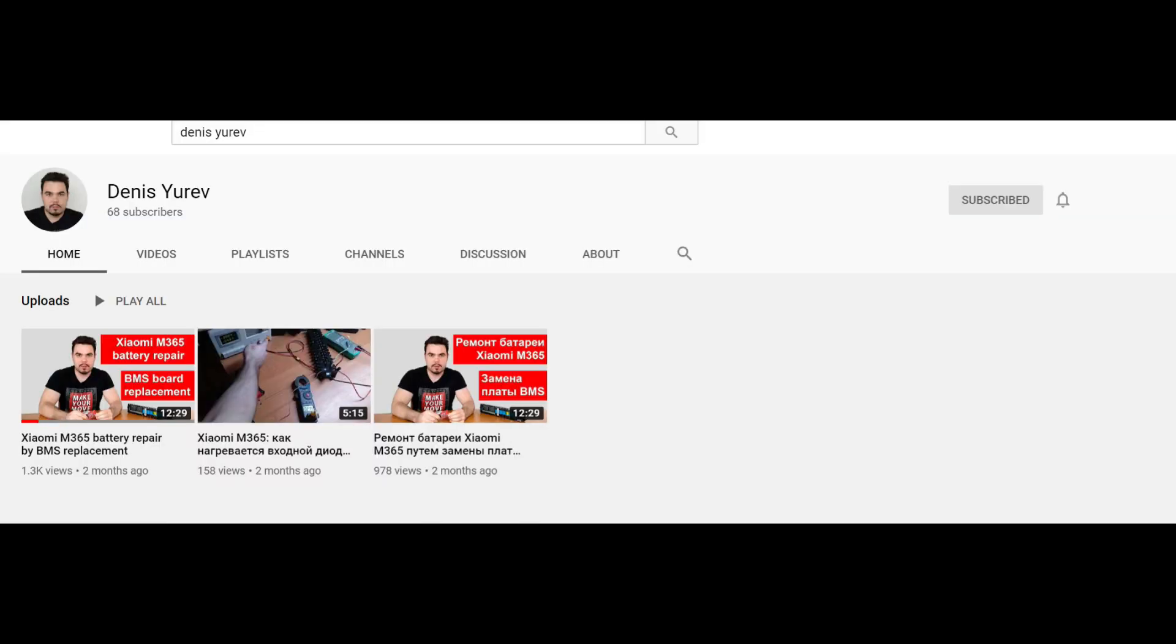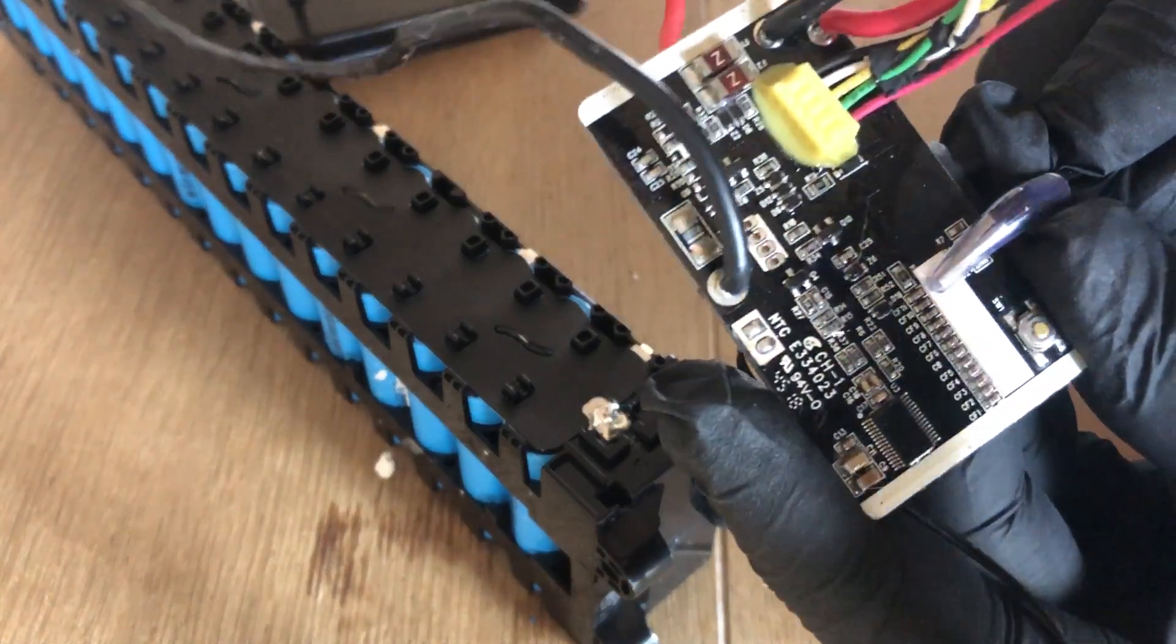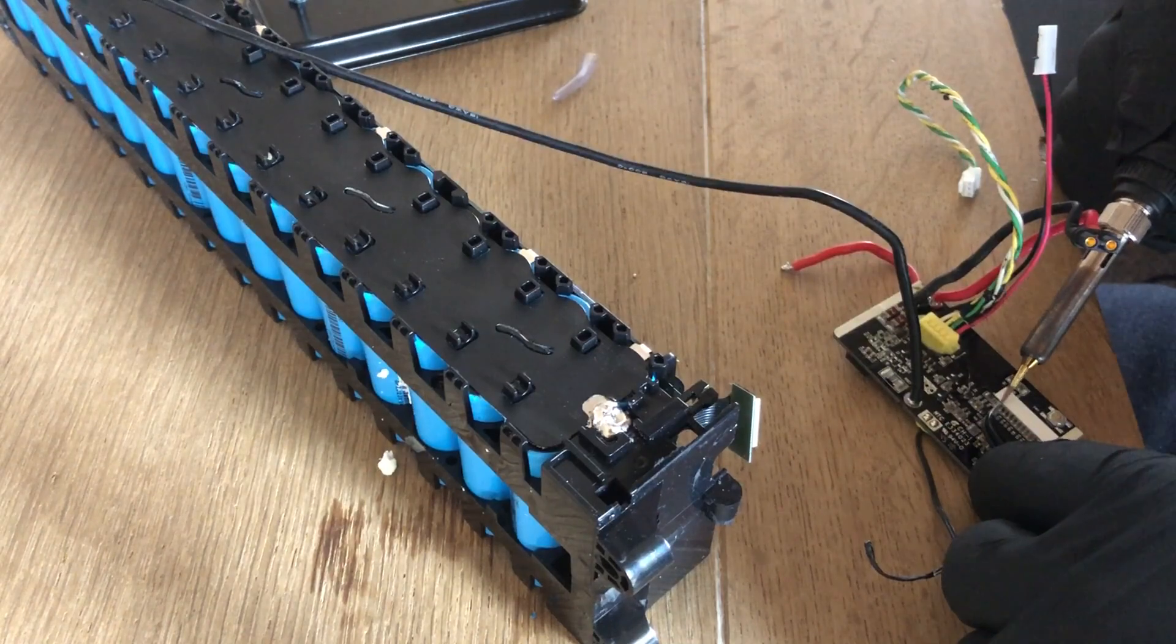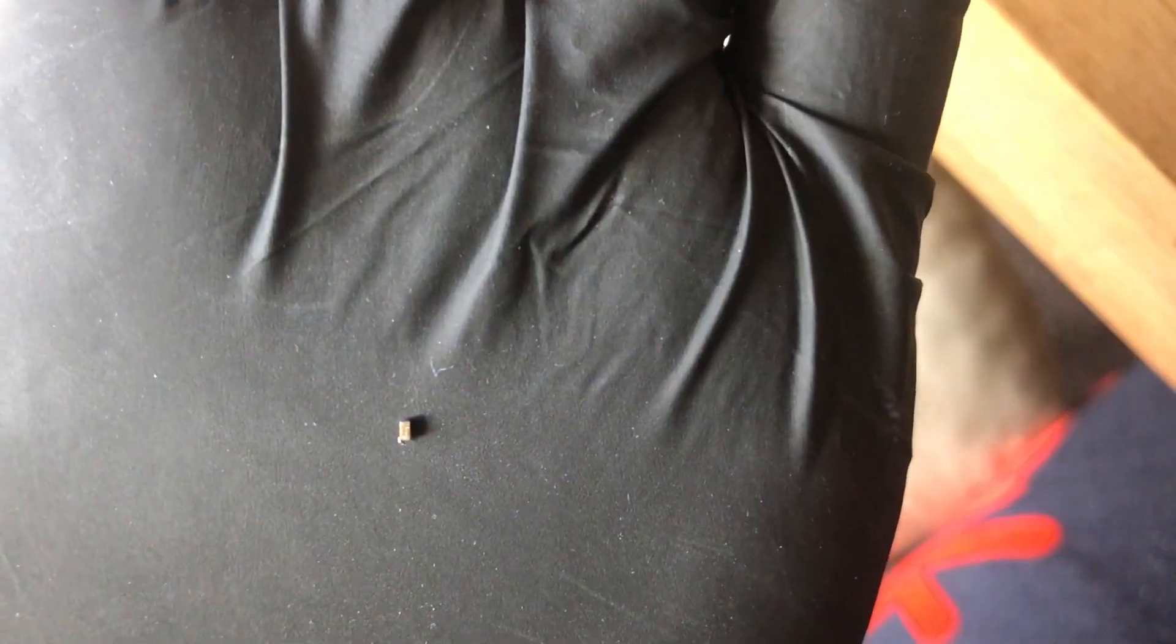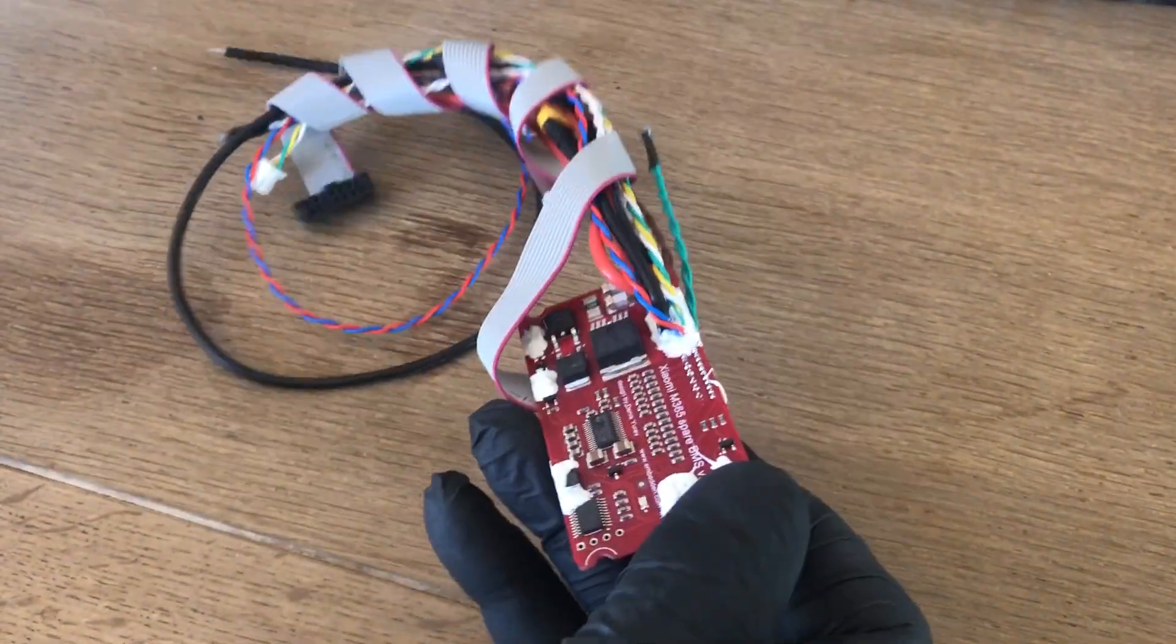I reached out to YouTuber Dennis Europe, who is making custom BMS for Xiaomi M365 scooters. He explained that it would be a faulty resistor, but that did not solve my issue, so I ordered a new BMS from him. And when it arrived, I installed it back into my battery pack.